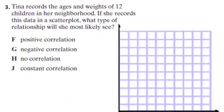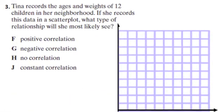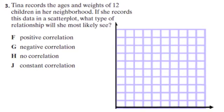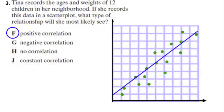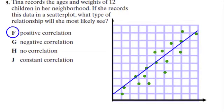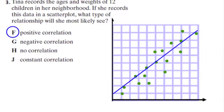In example three, where Tina is recording the ages and weights of children in her neighborhood, well, generally, as you get older, you increase in weight. And if we were to draw a scatter plot of that, we would probably see a positive trend in that data.